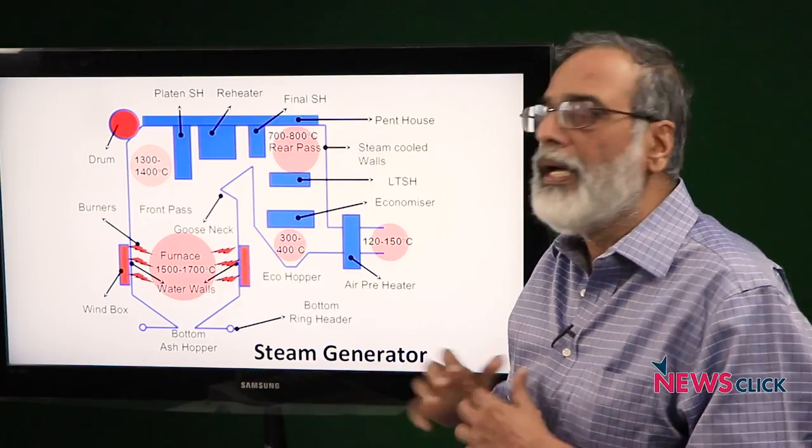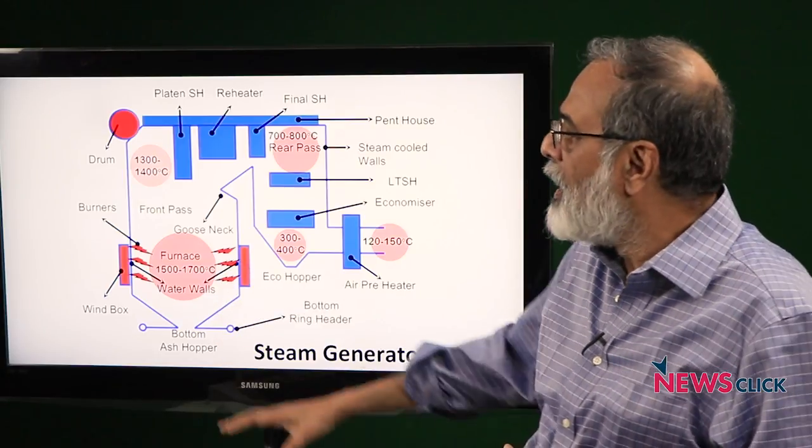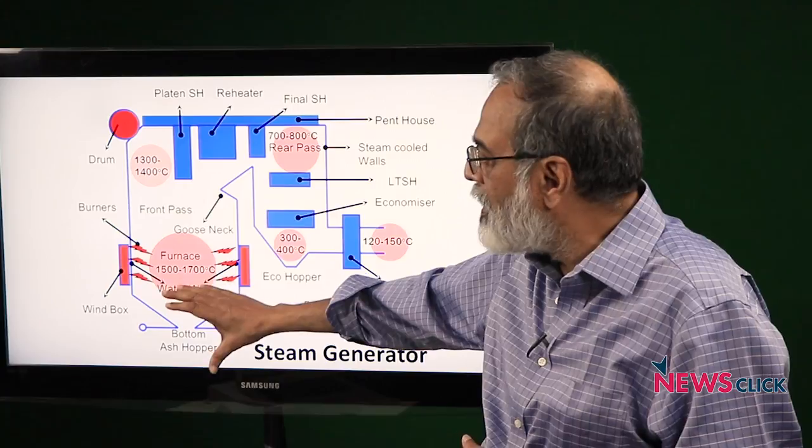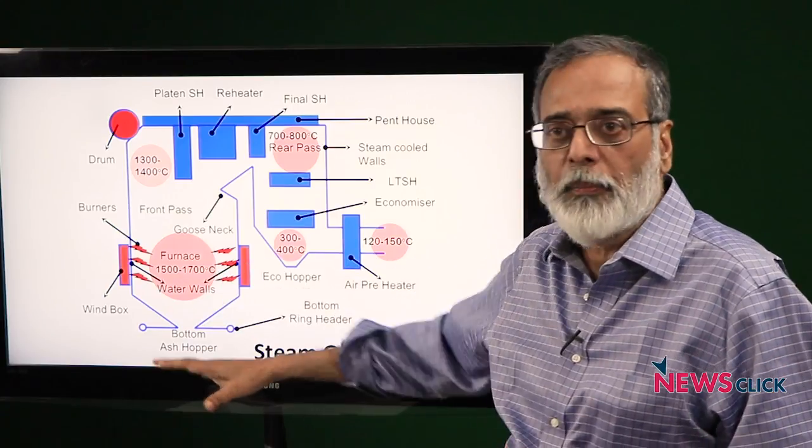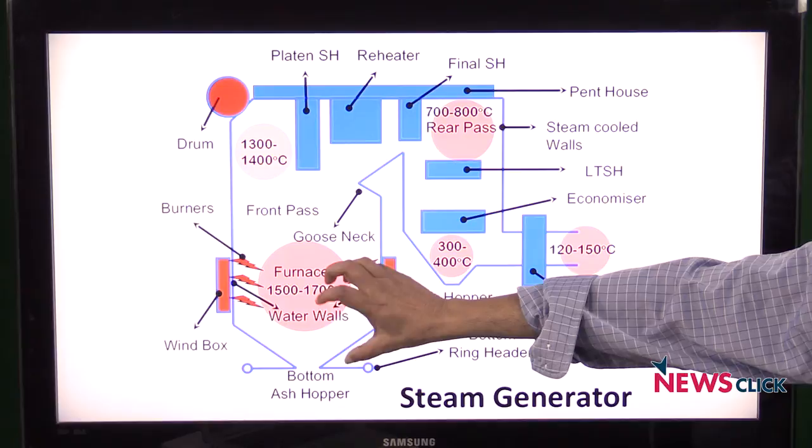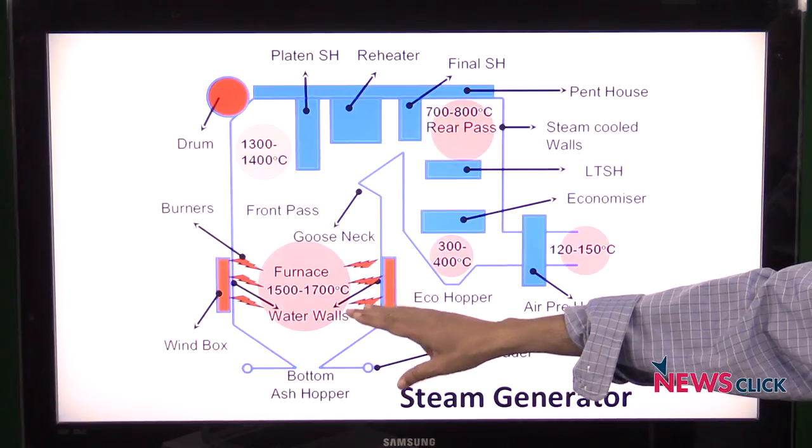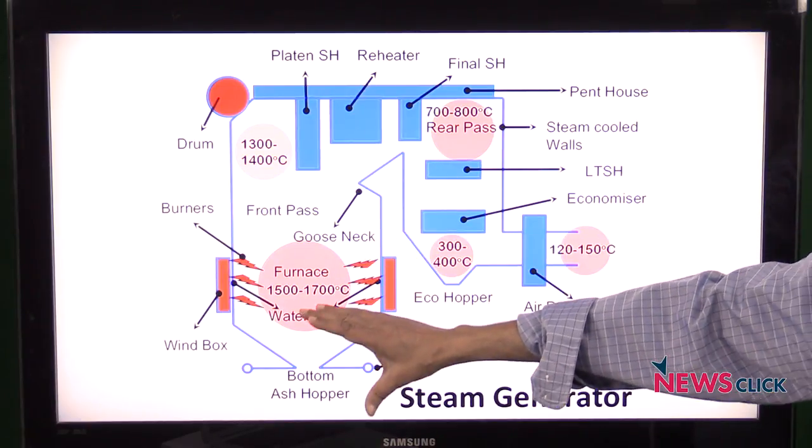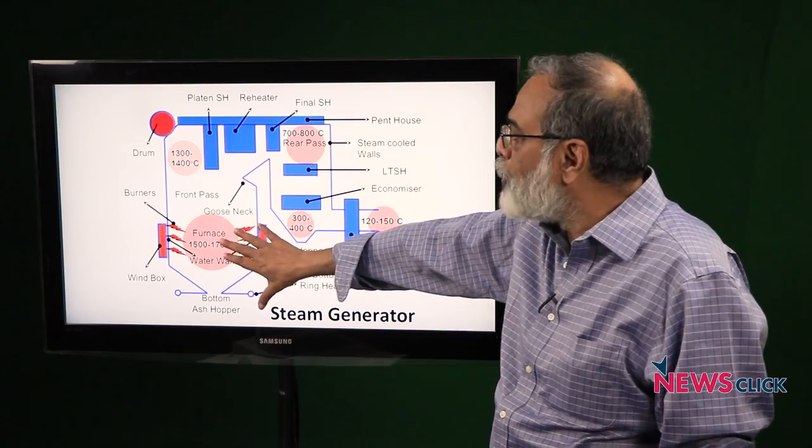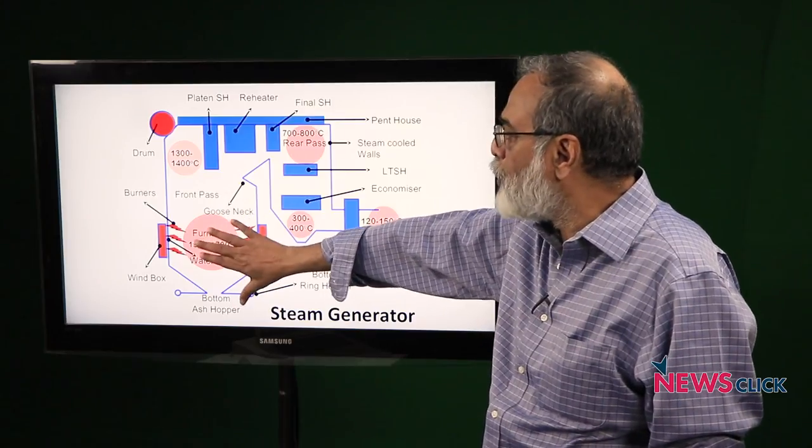When this double poking was taking place, a large amount of clinkers and ash fell down at the bottom. Once a large amount of ash and clinkers fell down with this double poking, the boiler became unstable. This led to boiler fluctuations, pressure fluctuations in the boiler.